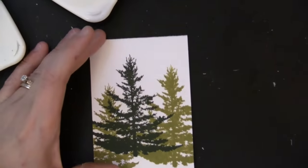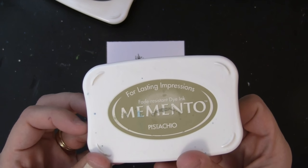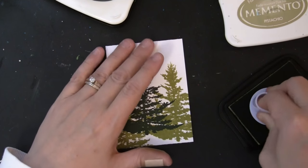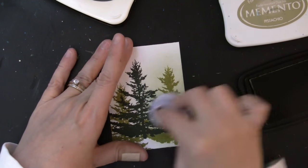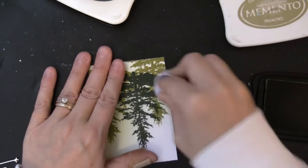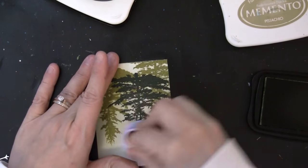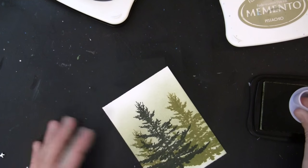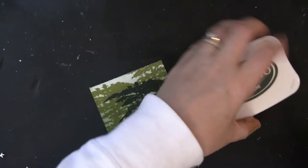Now that those are stamped, I'm going to add some inking to the background. I'm using Memento inks and an ink blending tool with a foam pad, and I'm starting with pistachio ink. I'm going to start from the bottom and work my way up towards the top of the sky. And I actually flipped this over, just felt a little more comfortable for me when I was starting at the bottom and working my way up to have the panel upside down. So that's just a tip if you're inking something and it doesn't feel like it's very comfortable, turn your panel every which way until it is easier for you to apply the ink.